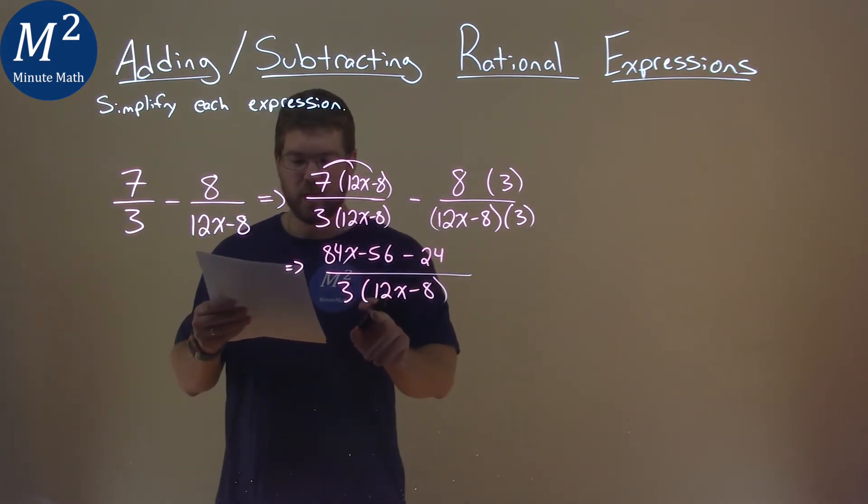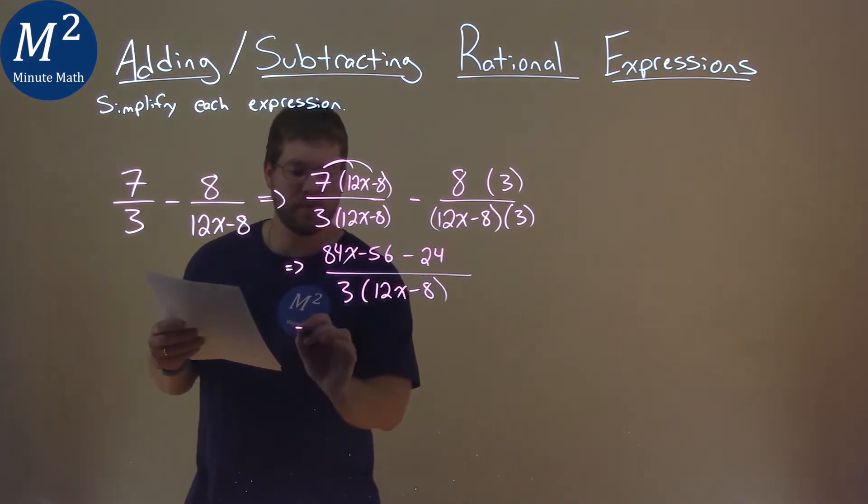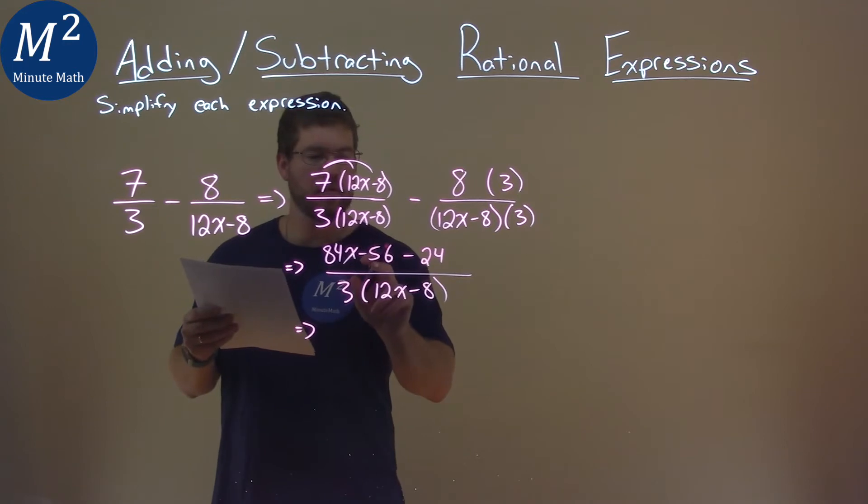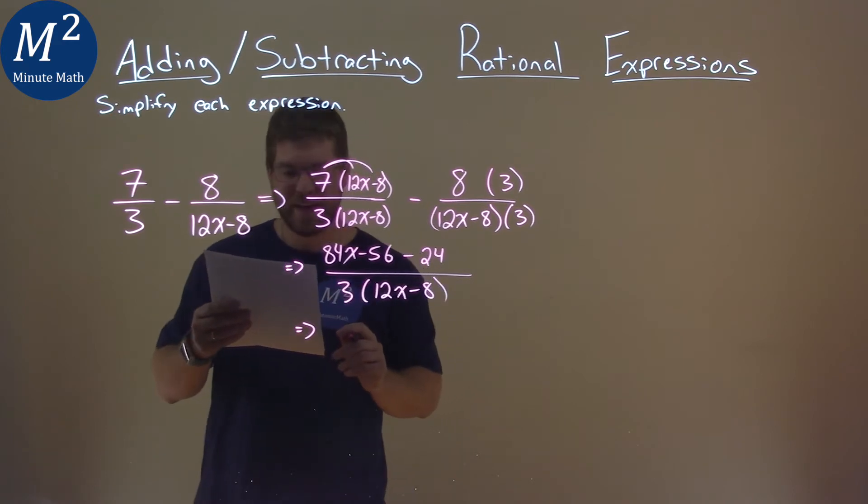Okay, keep on going. We're going to keep simplifying. We can combine our like terms in the numerator. We have -56 plus -24, which equals -80.